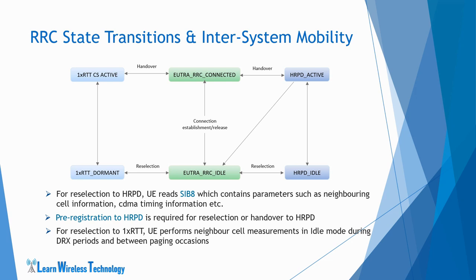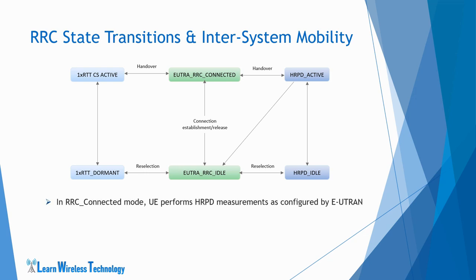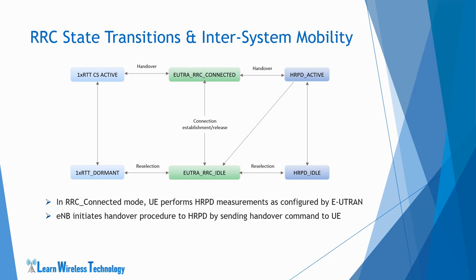Measurements are performed when the signal quality from the eUTRAN serving cell falls below a given threshold, and the reselection mechanism is the same as in 3GPP inter-RAT cell reselection. In eUTRAN RRC connected mode, the UE performs measurements on the HRPD network as directed by eUTRAN. The UE measures the strengths of each HRPD neighbor cell and reports them in an RRC message. Based on the measurement reports, the eNodeB initiates the handover procedure and sends a handover command in an RRC message to the UE, and the UE moves from RRC connected state to HRPD active state.